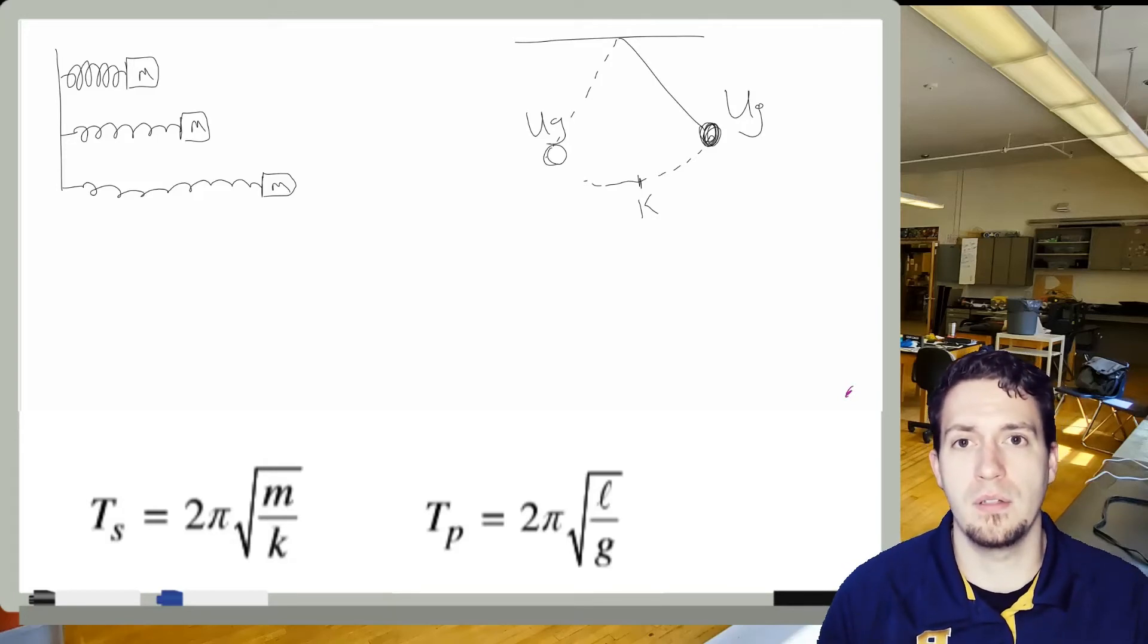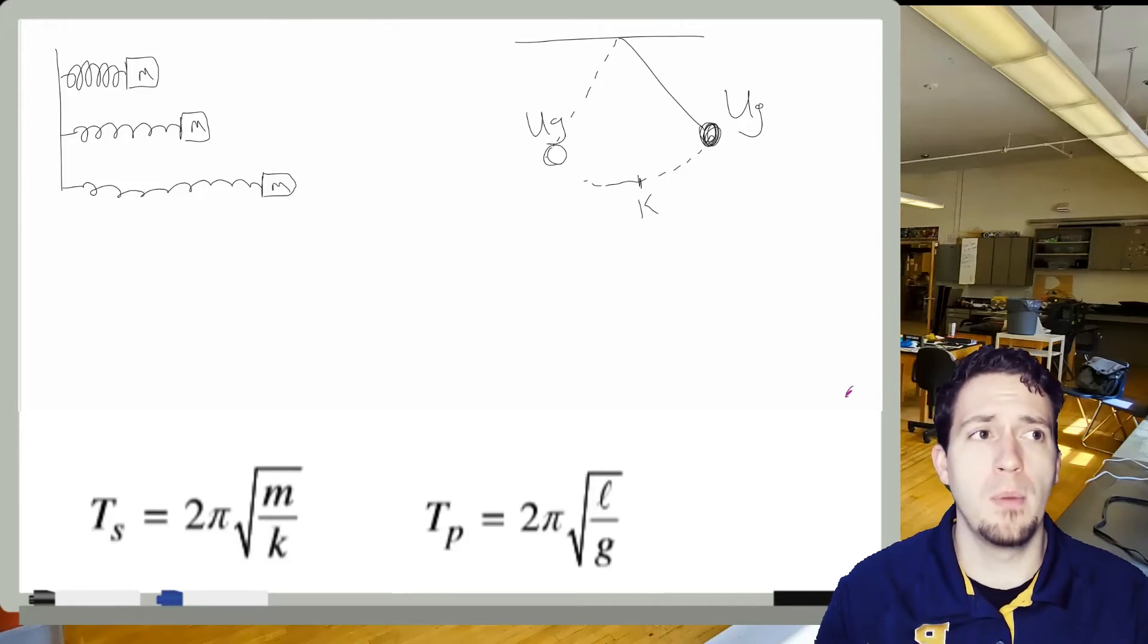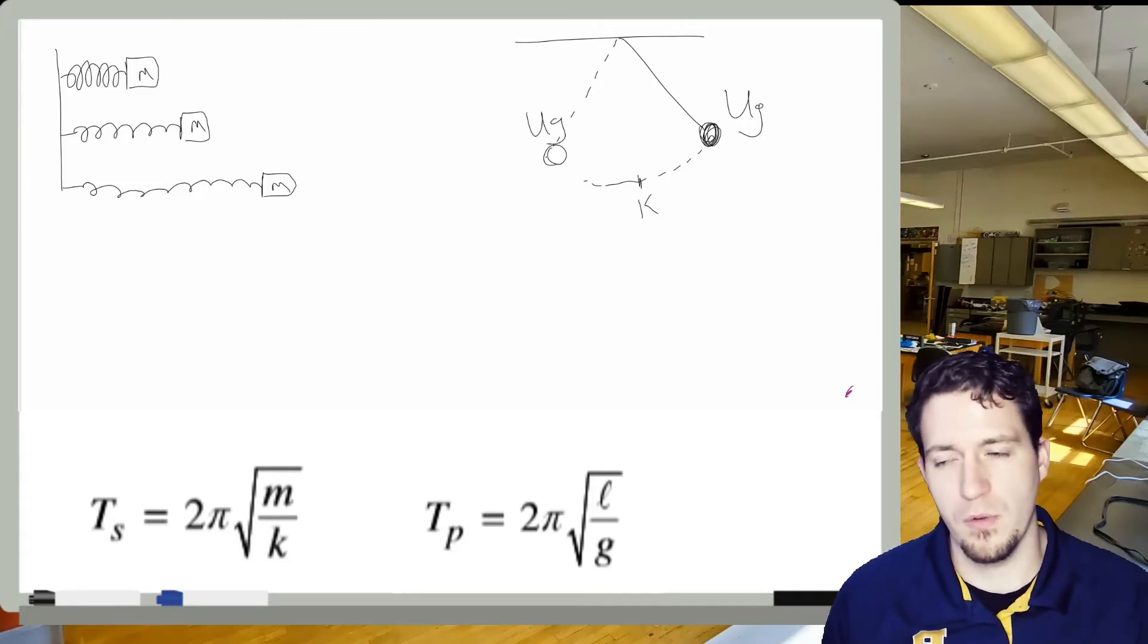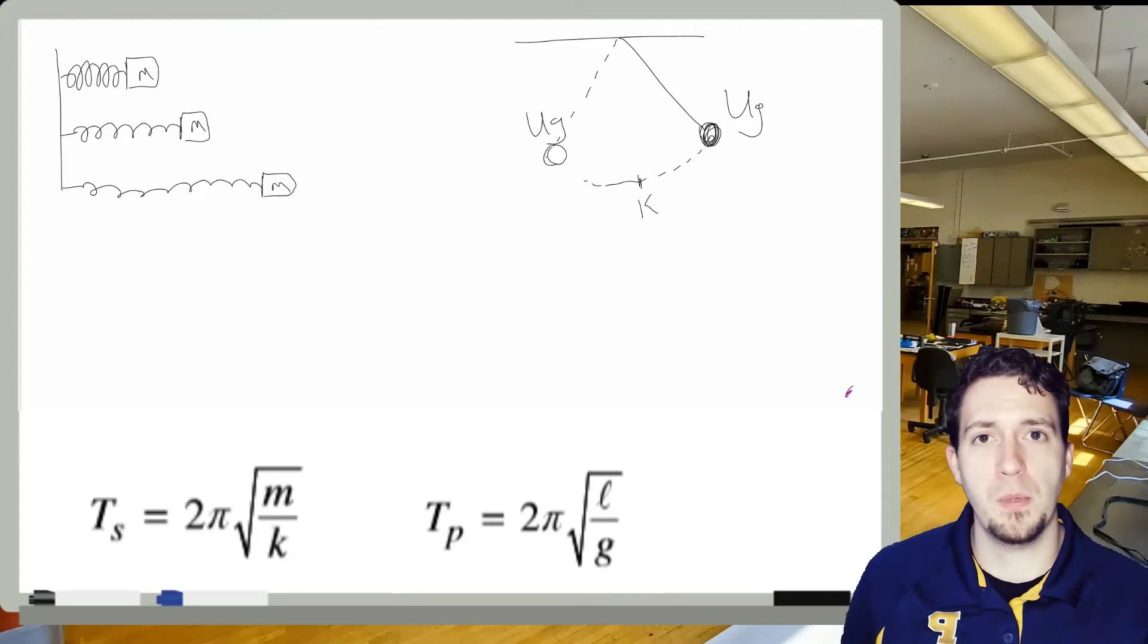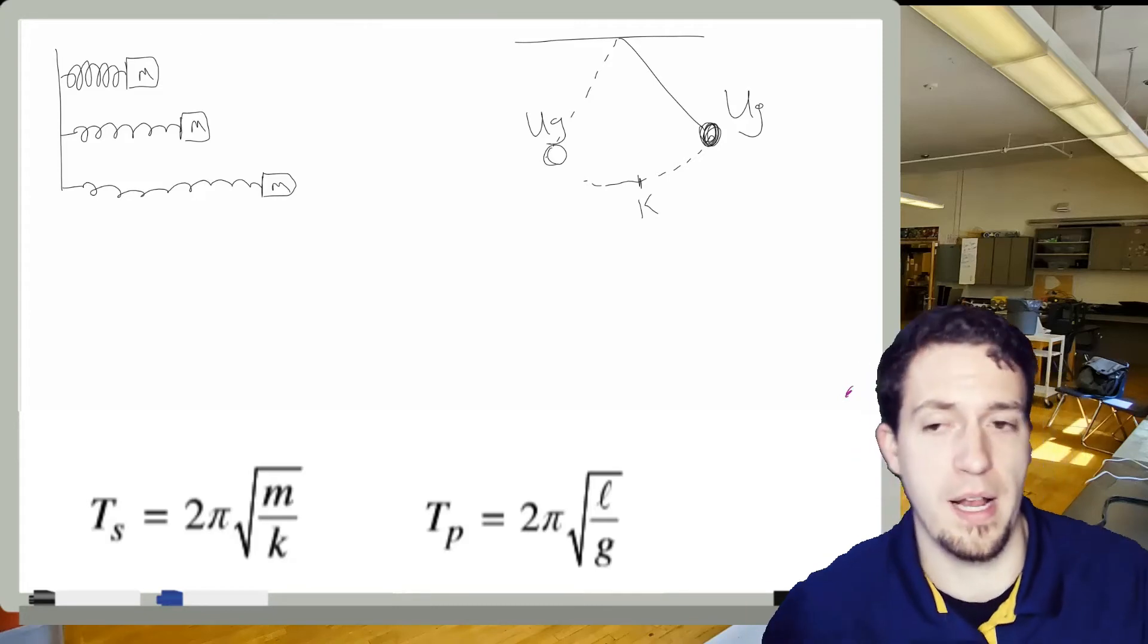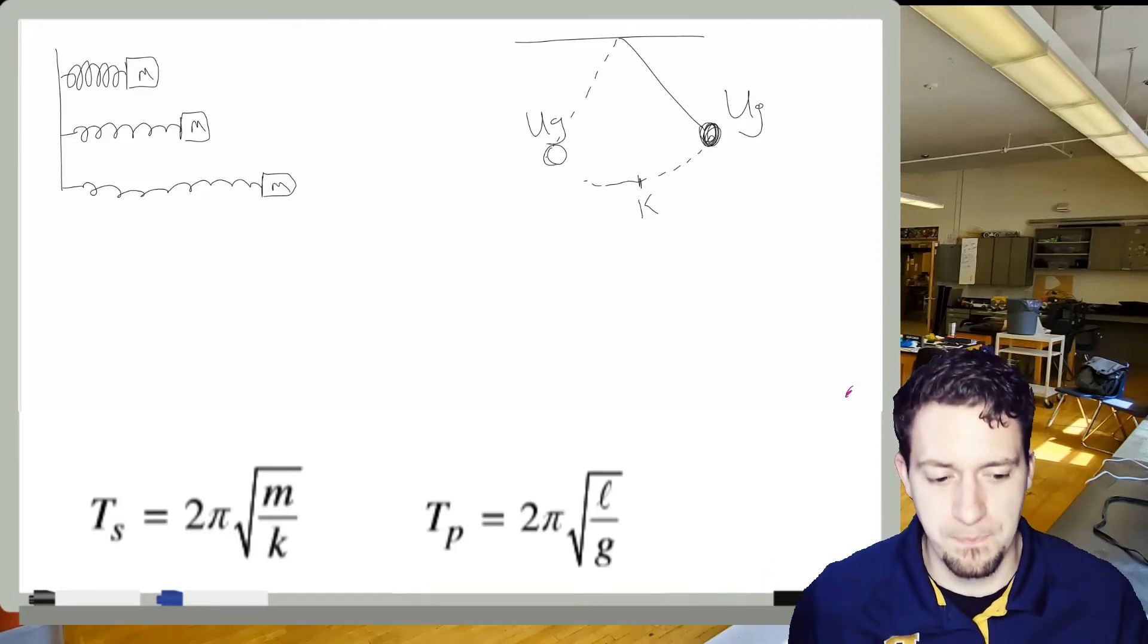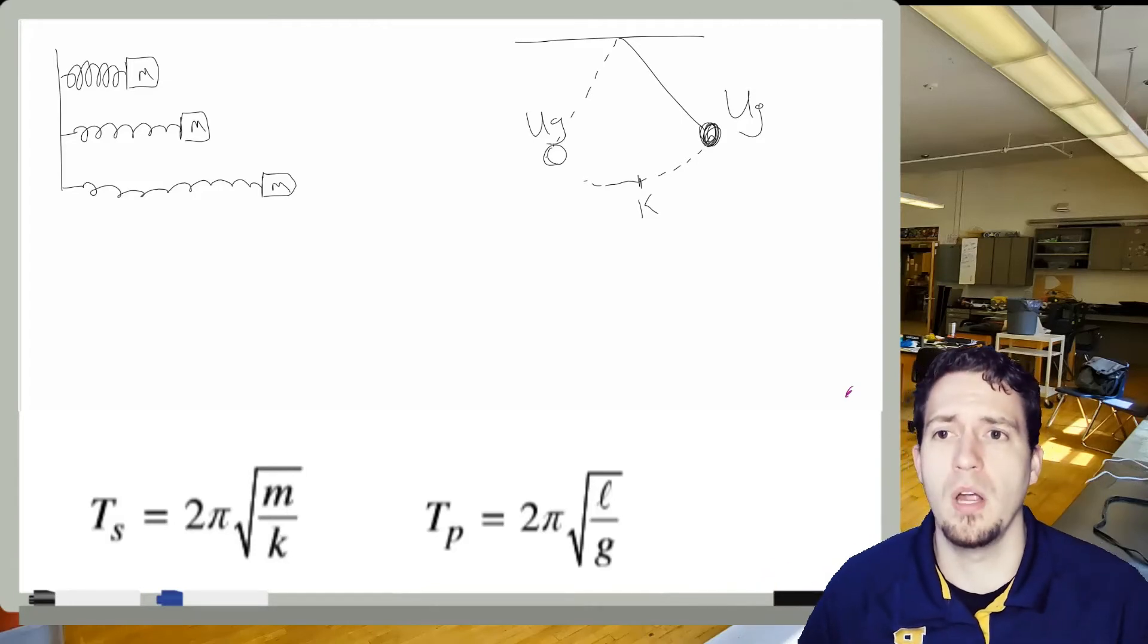But mass actually has no effect with the pendulum. And similar to amplitude, with the pendulum, if I increase the mass, it would be more force, but more massive objects are also harder to move. So with the spring, the difference is by changing the mass, I'm not actually changing the force. Changing the spring constant would actually change the force, which you can see is in that equation.